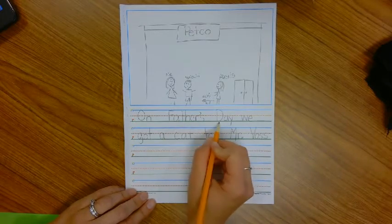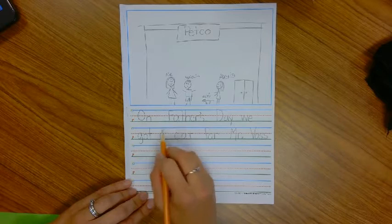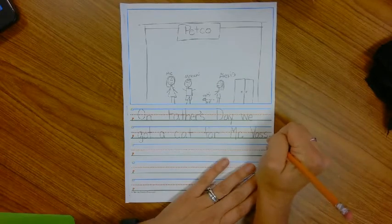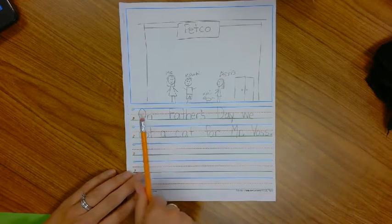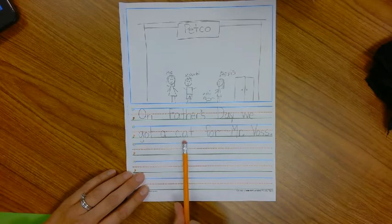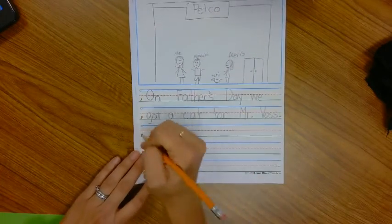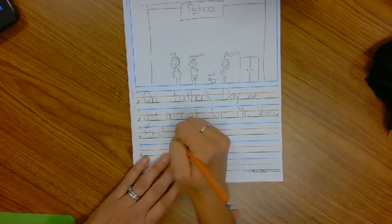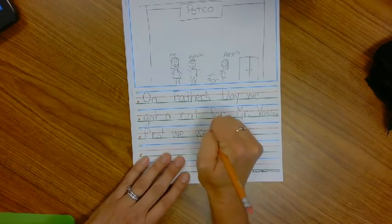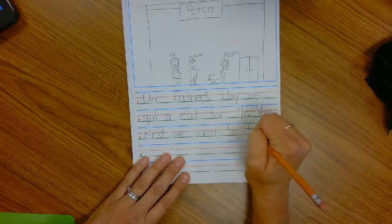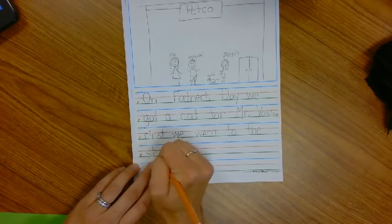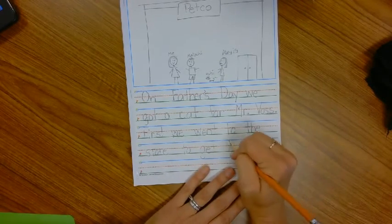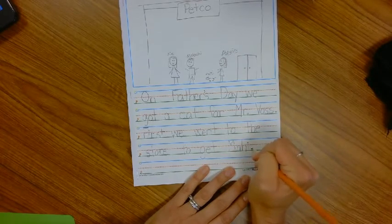Now who knows what I forgot? That's right, it's a period. So a period at the end of my sentence. Let me go back and read it: On Father's Day, we got a cat for Mr. Boss. First, we went to the store to get Mahi. Mahi is the name of our cat, so I used a capital letter here and a period.